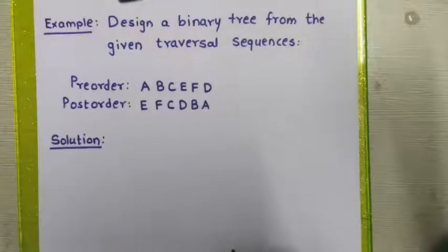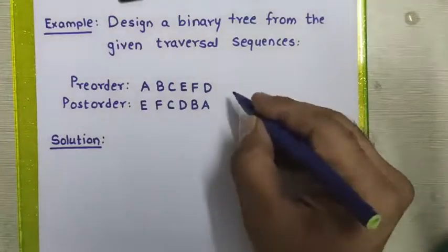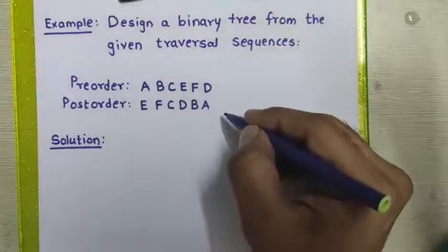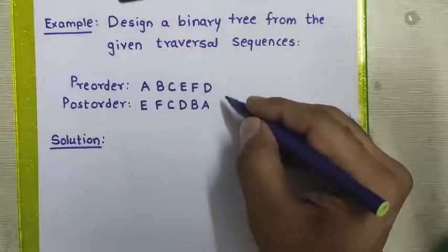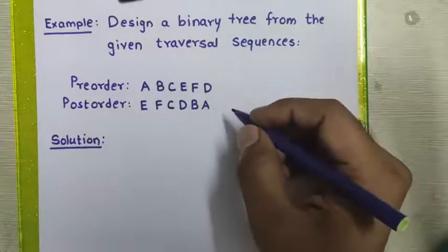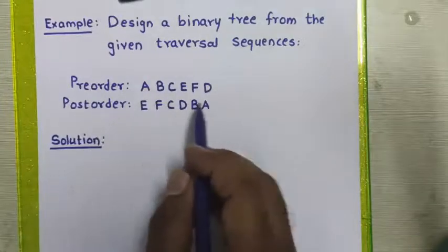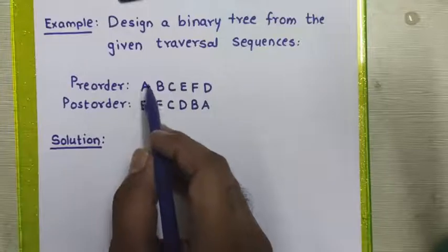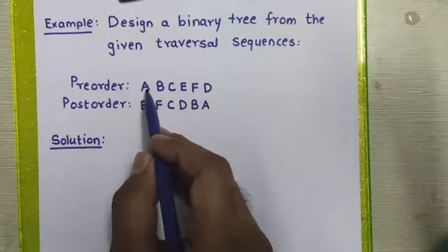In this tutorial we will study how to design a binary tree from a given pre-order and post-order sequence. Given these two sequences, how do we design a binary tree? As we know, in pre-order sequence the root always comes at the beginning, so we can easily find the root of the tree. From the given pre-order sequence, we can say that A is the root of this binary tree.